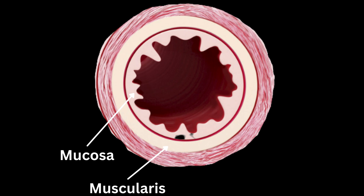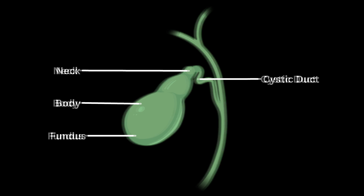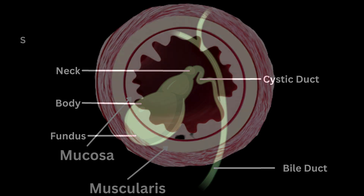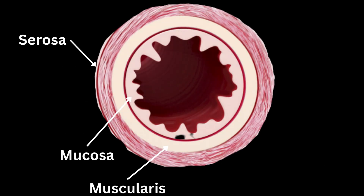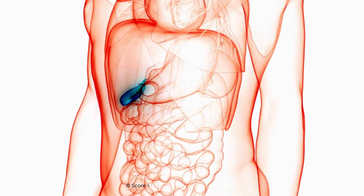These muscles contract to squeeze and release bile into the cystic duct, which leads to the bile duct and eventually to the small intestine. The outermost layer of the gallbladder is the cirrhosa, a thin connective tissue layer that provides a protective covering and helps attach the gallbladder to surrounding structures.